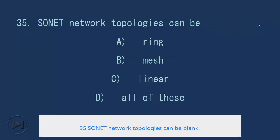35. SONET network topologies can be blank. A. Ring, B. Mesh, C. Linear, D. All of these. Answer: D. All of these.